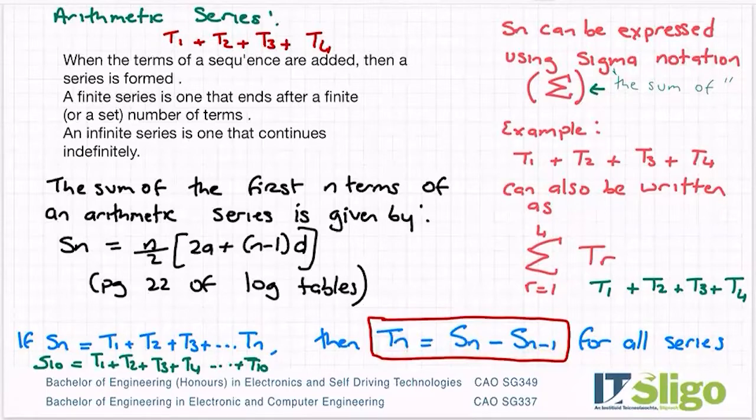So in my case here, in my example, I'm saying I'm doing 10 terms. If I subtract the sum of the 10 terms minus the sum of the nine terms, then the difference between them is whatever value that T10 was. And that's for all series. So sometimes the questions starts by giving you information about the series and you have to go back and find information about a certain term in the sequence.